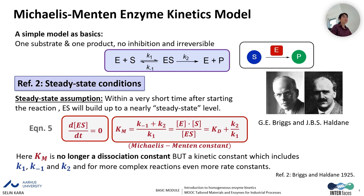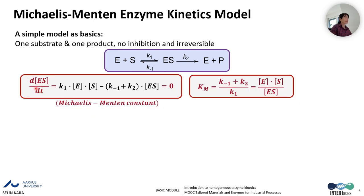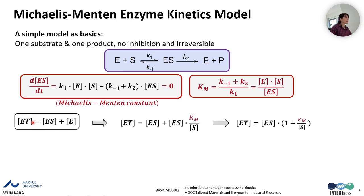With the steady-state assumption, Km is no longer a pure dissociation constant. Setting the change in ES complex concentration to zero, we rewrite the equation as: K1 multiplied by E multiplied by S, minus (K-1 plus K2) multiplied by ES equals zero. Since the total enzyme concentration equals the free enzyme plus the ES complex, rearranging gives the ES complex concentration multiplied by (1 plus Km divided by S).